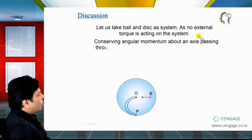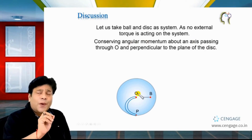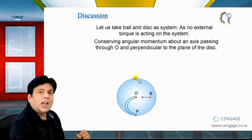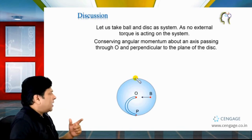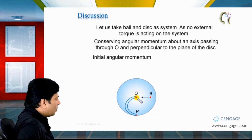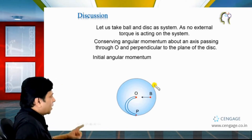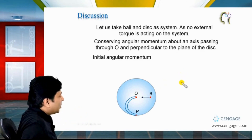Let us conserve the angular momentum about this axis, which is perpendicular to the plane of the disc and in the vertical direction. We write: initial angular momentum equals final angular momentum. The initial angular momentum of the system about O is zero because the disc is not rotating and the direction of velocity of ball B passes through O. So L_initial vector equals zero.